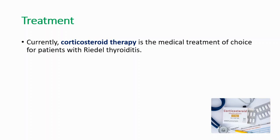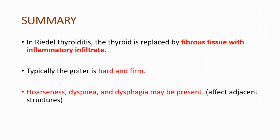Let's summarize what we have learned. In Riedel's thyroiditis, the thyroid is replaced by fibrous tissue with inflammatory infiltrate. Typically, the goiter is hard and firm, and when this disorder affects adjacent structures, we can see hoarseness, dyspnea, and dysphagia.